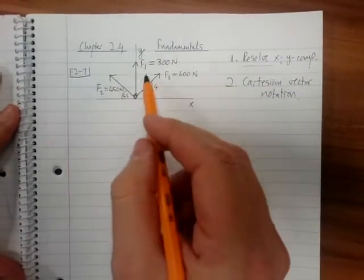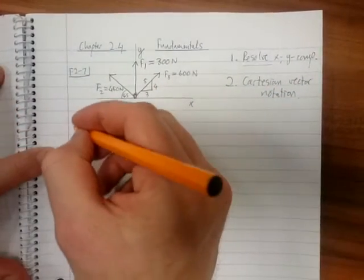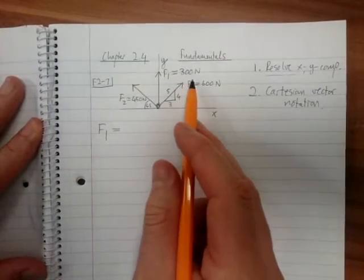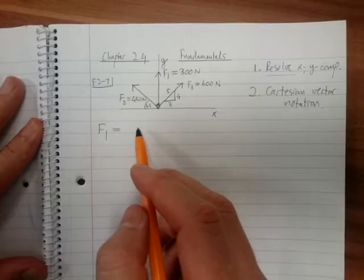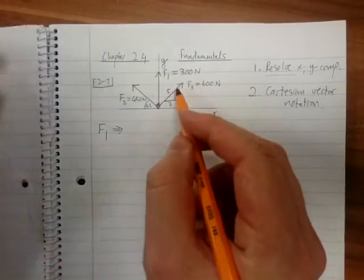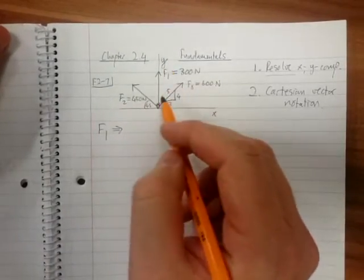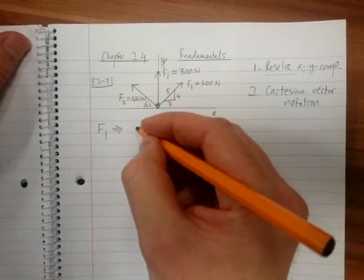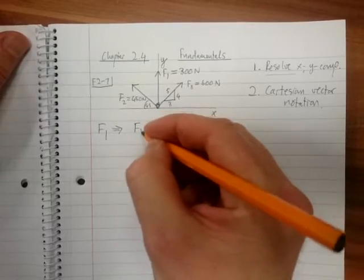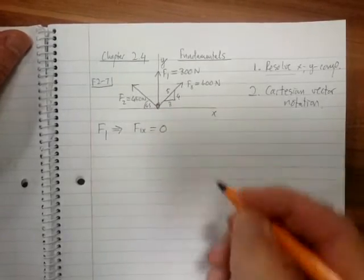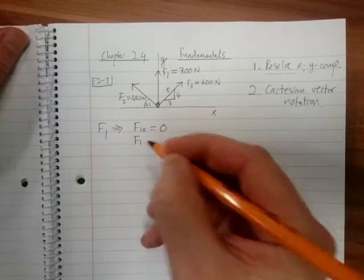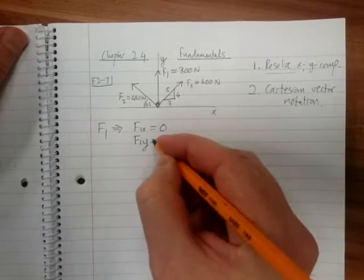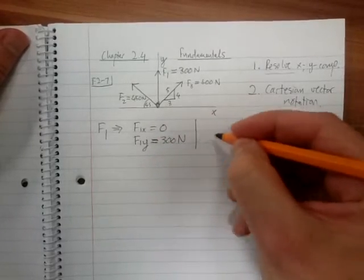If we resolve F1 into its X component, we can see that obviously there is no X component here. The force is directed along the y-axis, so F1X is 0, and then of course F1Y is 300 Newton.